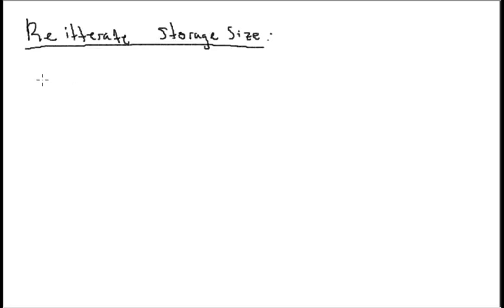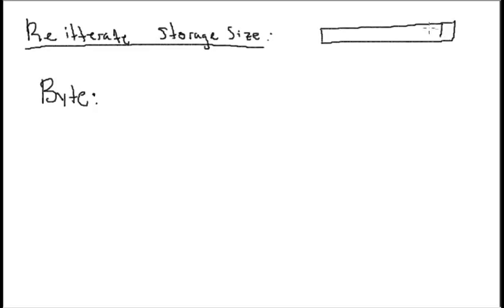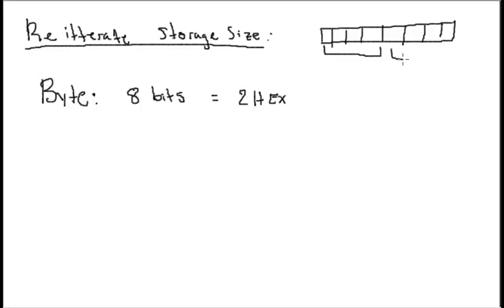So we had a byte size. That was the storage size when we think about our computer storage as a block or segment of memory. That was the one that had eight chunks in it — so eight bits. A byte is eight bits, and that's also two hex digits, with one hex digit here and one hex digit there.